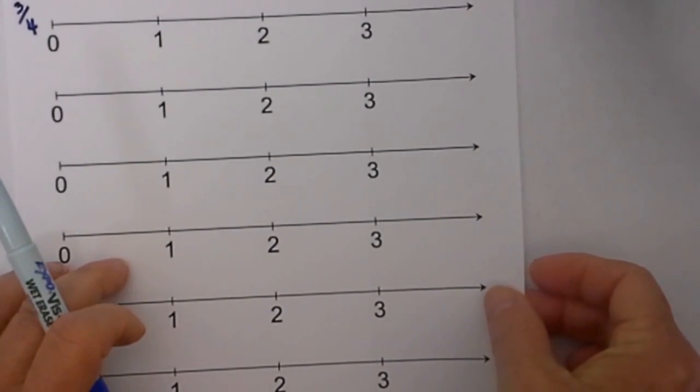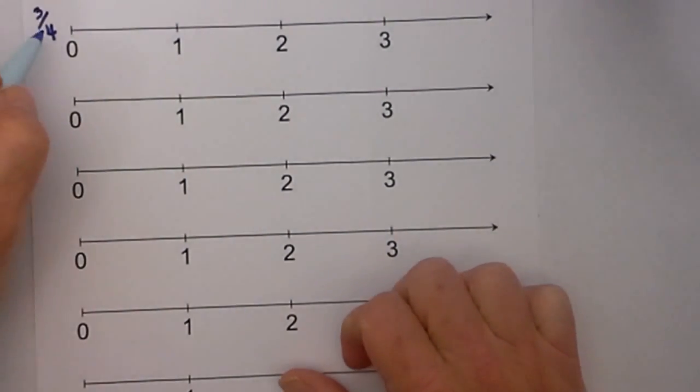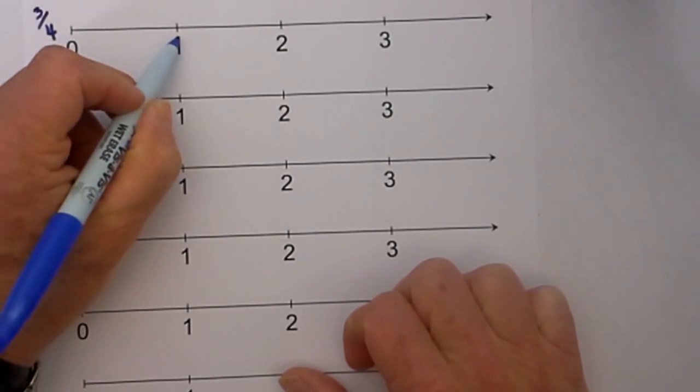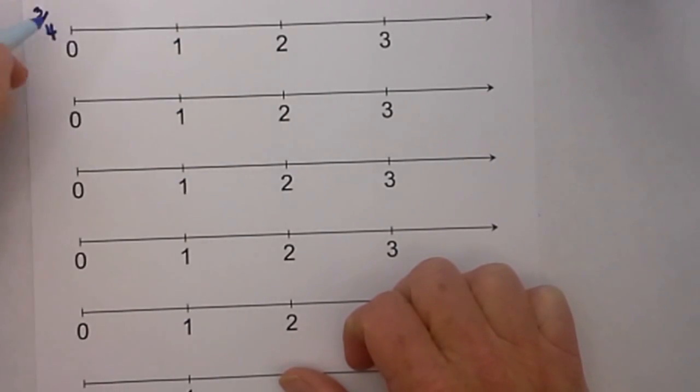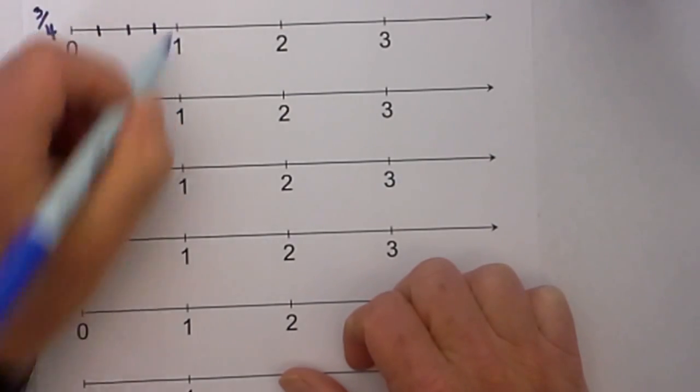First up is 3 fourths. So the denominator tells you how many spaces you need to have between 0 and 1 including the 1. So we go 1, 2, 3, 4.